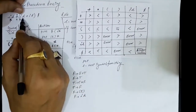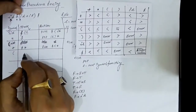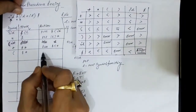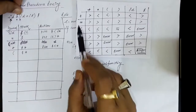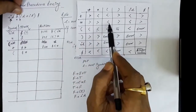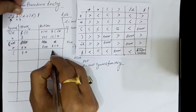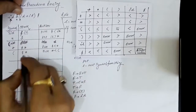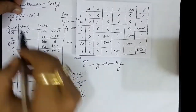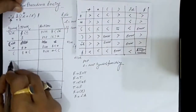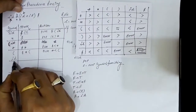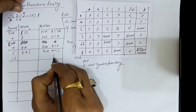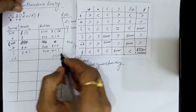Next symbol is opening parenthesis. On the stack we have dollar and multiplication sign. We check the precedence of multiplication over open parenthesis — multiplication has less precedence than the opening parenthesis, so we push opening parenthesis on the stack. Next symbol to check is id. Opening parenthesis has less precedence than id, so we push id onto the stack.